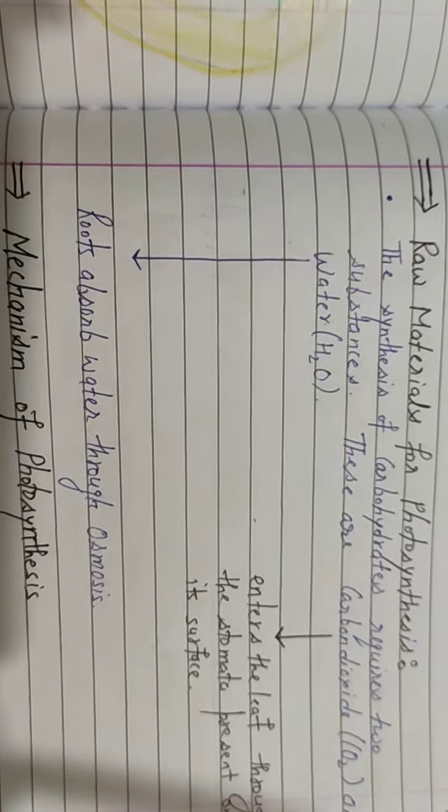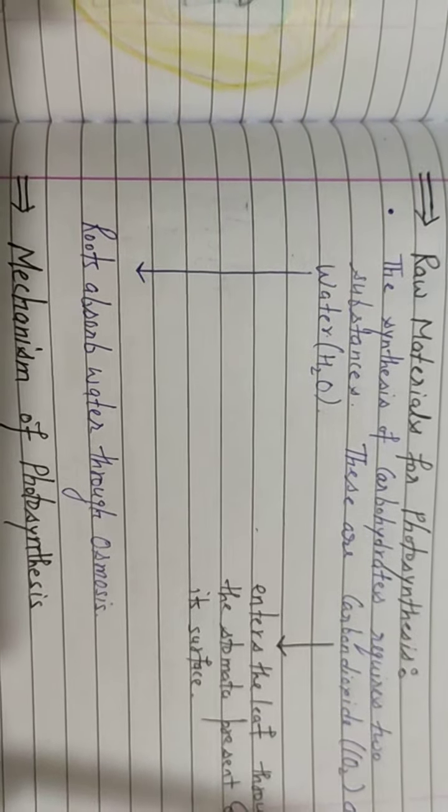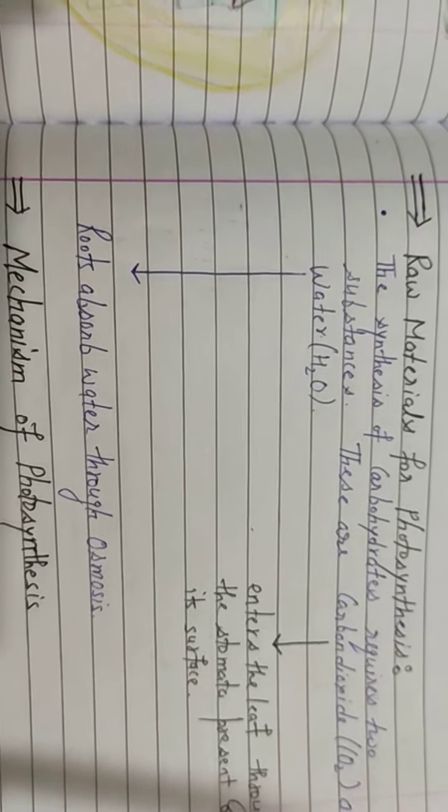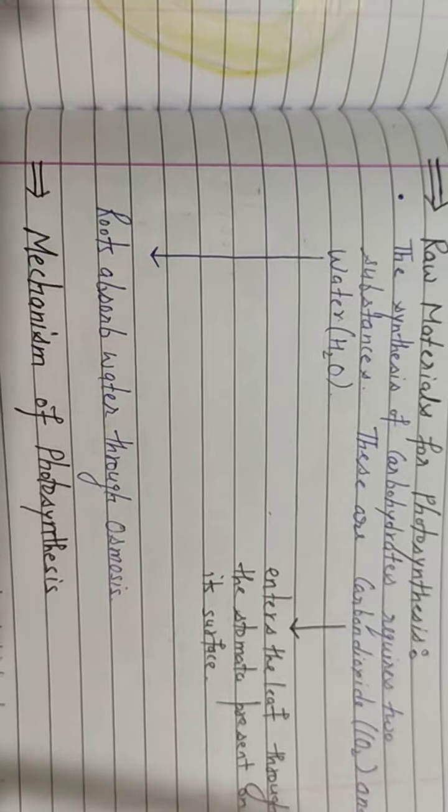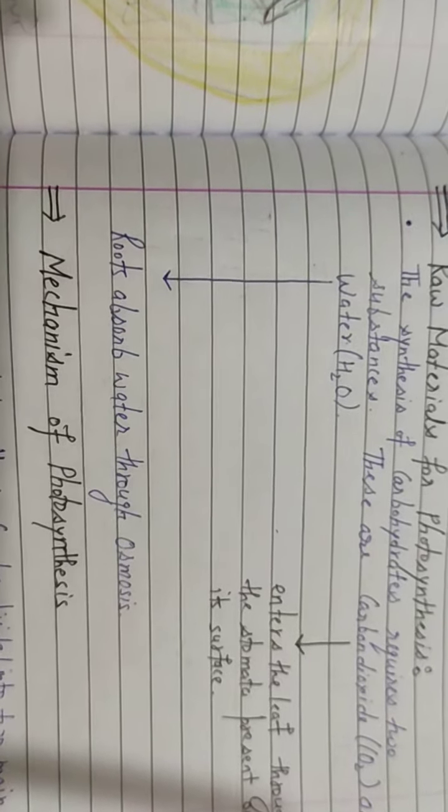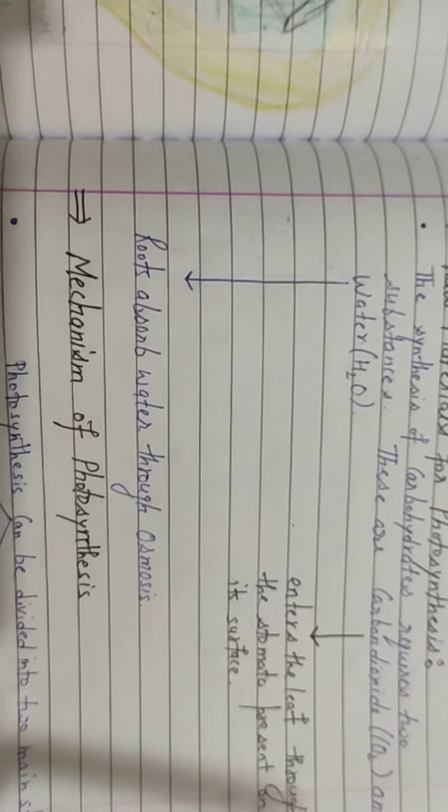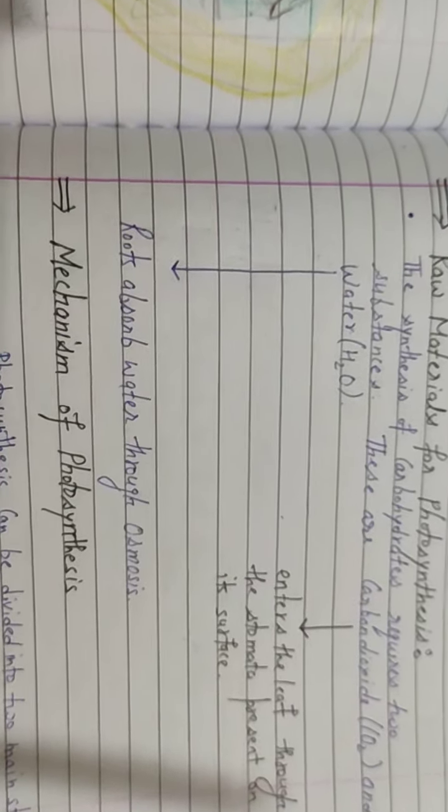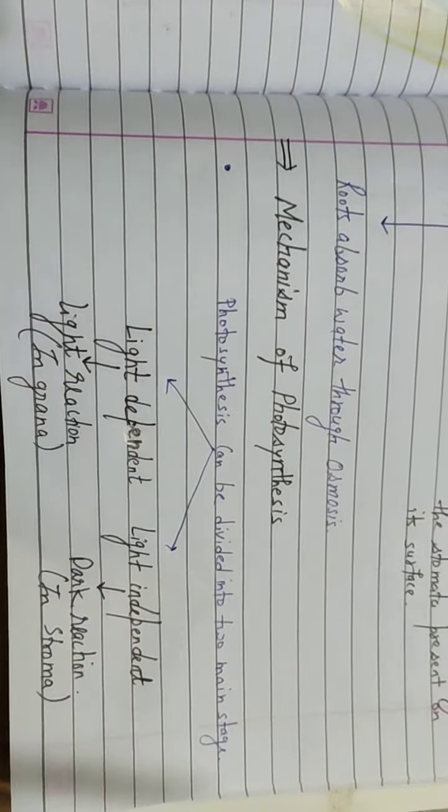Second one is water. Roots absorb water through the process of osmosis. The general definition of osmosis is the movement of water from a region of higher concentration to a region of lower concentration. Water moves from the soil to the roots where the concentration is lower.